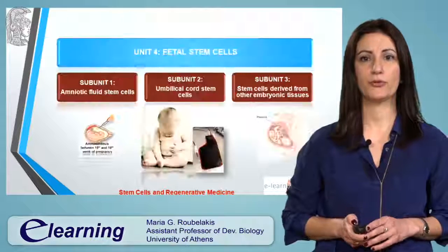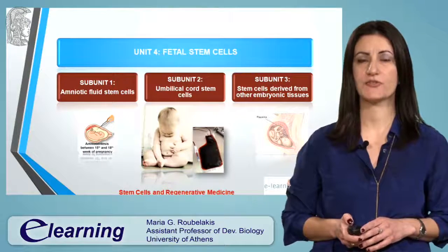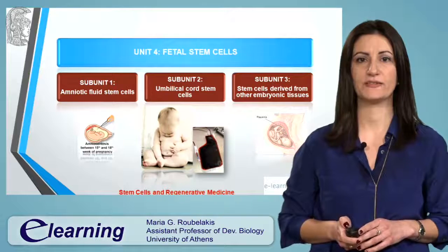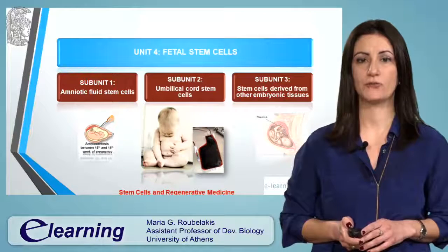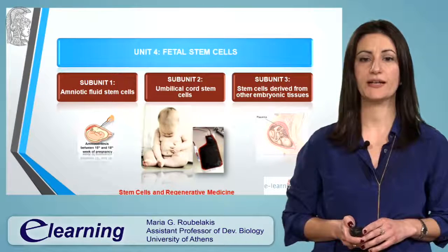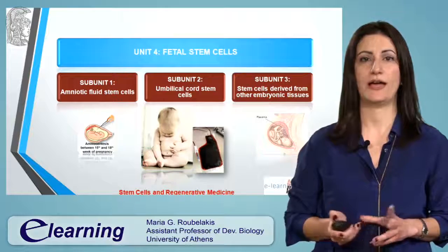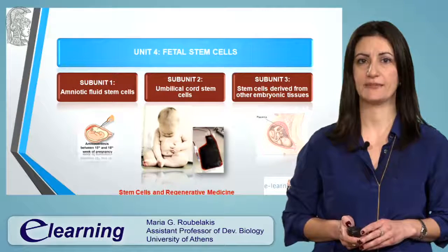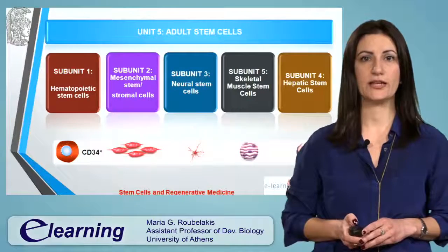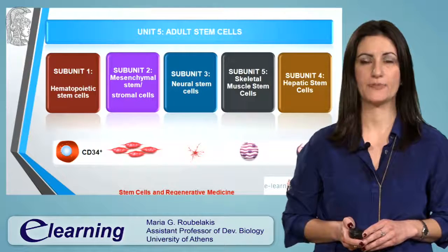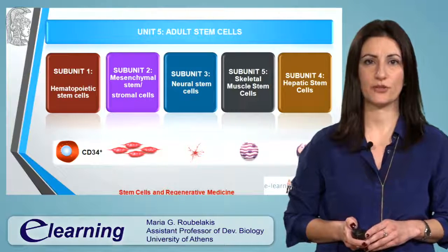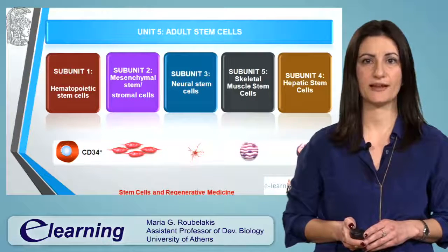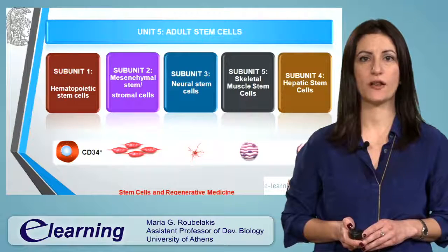The fourth unit focuses on the stem cells derived from fetal tissues such as amniotic fluid, umbilical cord or other embryonic tissues such as placenta. The fifth unit includes information on the major adult stem cell types such as hematopoietic, mesenchymal, neural, muscle or hepatic stem cells.